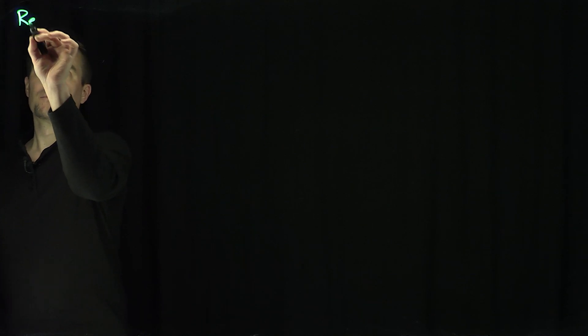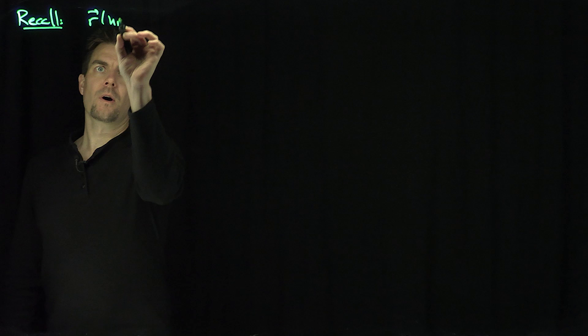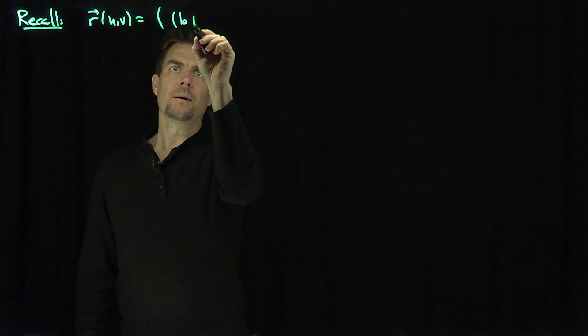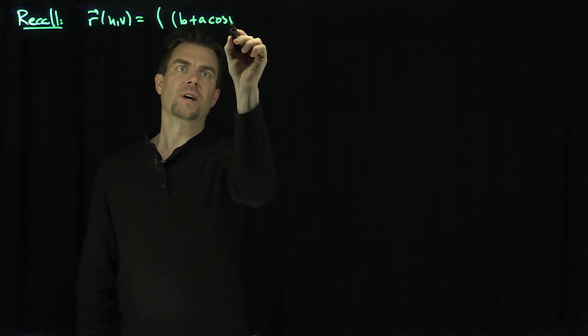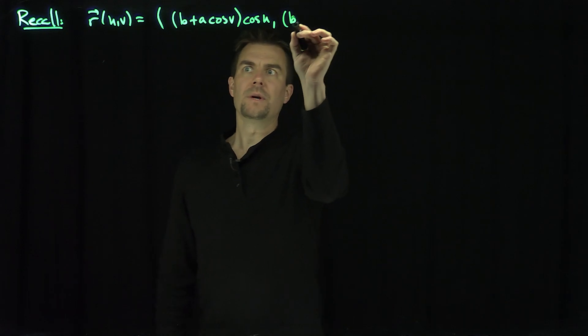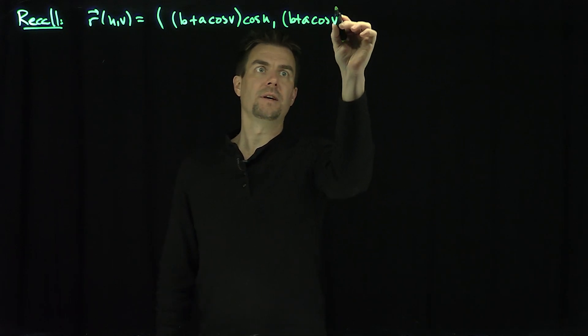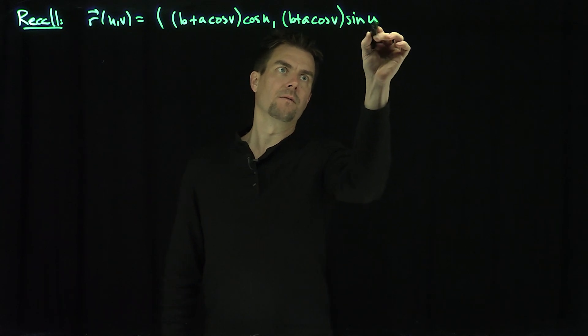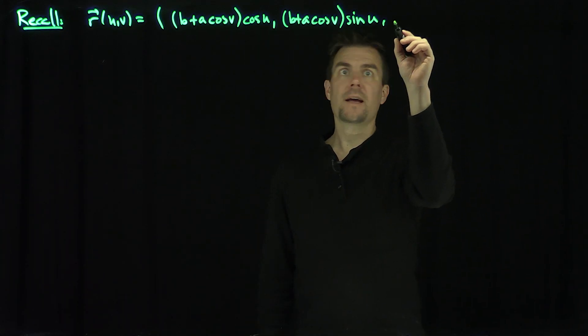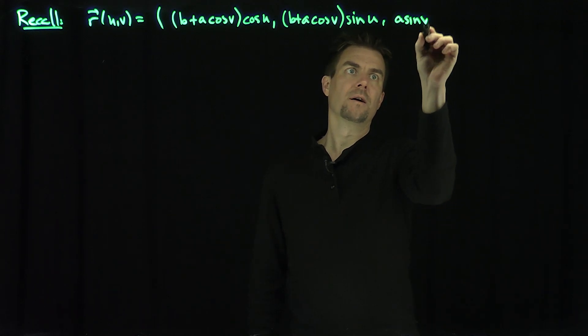Hello, students. In this video, we'll find the geodesic equations on a torus. Let's recall that our torus is defined in the following way: R of u and v is going to be (b + a·cos(v))·cos(u), (b + a·cos(v))·sin(u), and then a·sin(v).